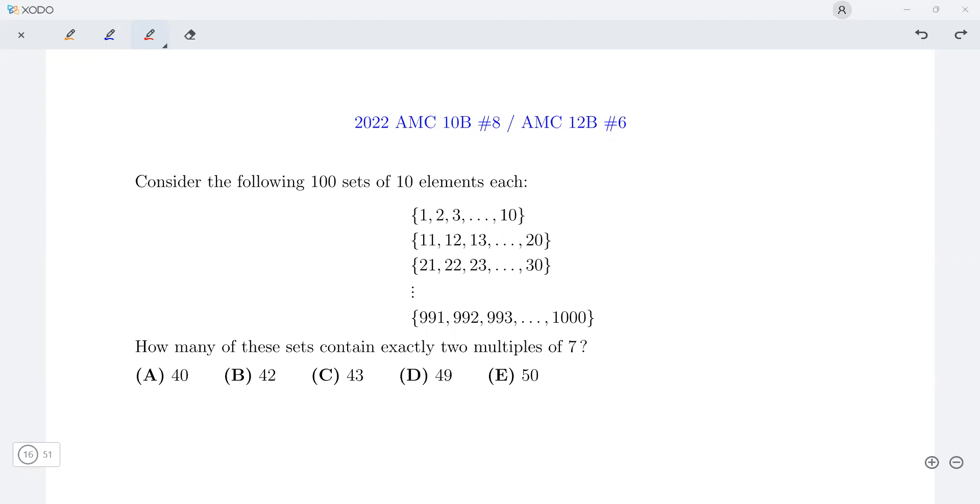How many of these sets contain exactly two multiples of 7? So we see that these sets are from the first 1000 numbers. This is a partition of these 1000 numbers into blocks of 10 numbers.